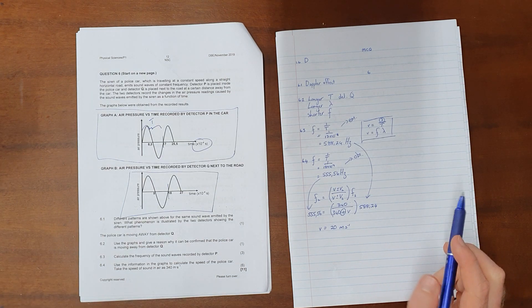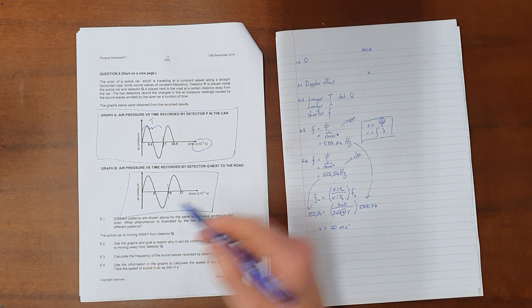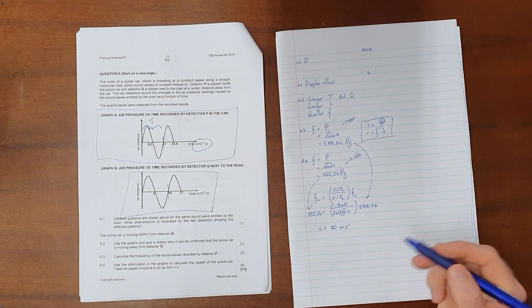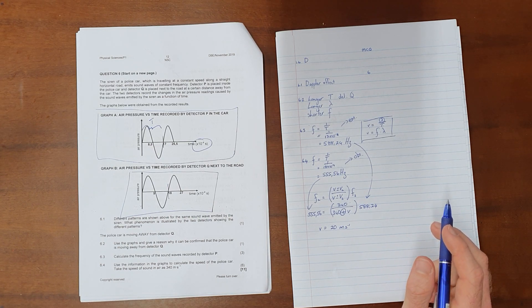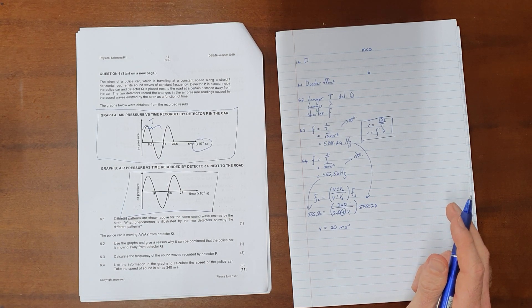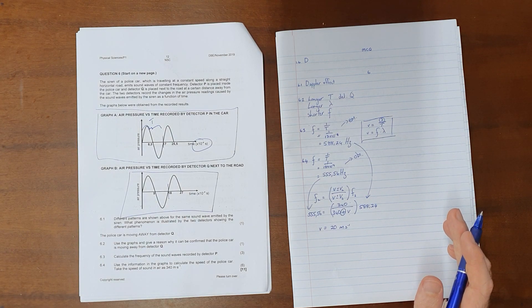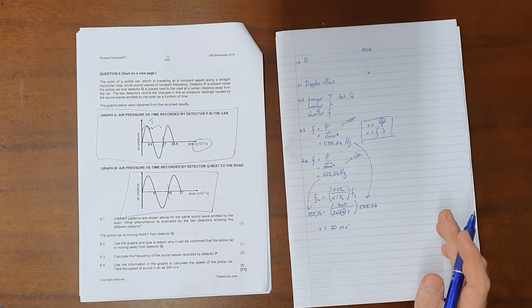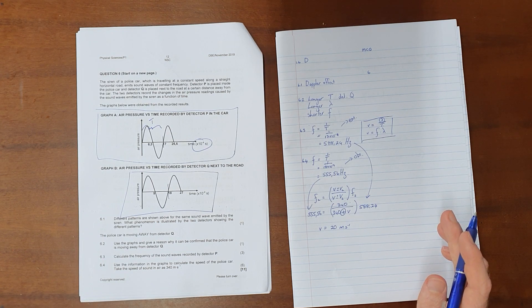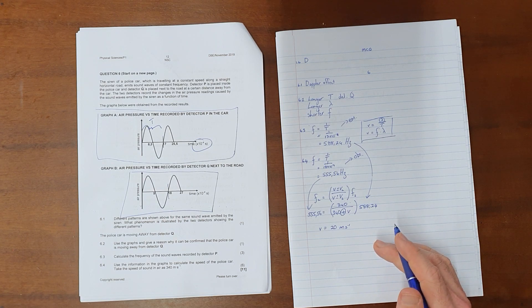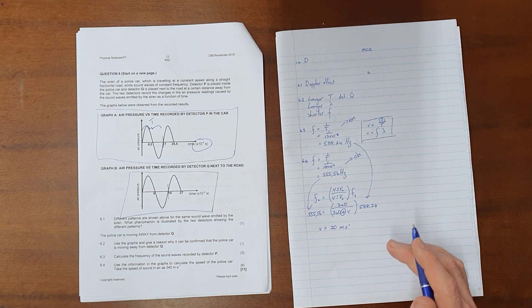A common question that is asked in Doppler effect that is not asked here would be for an explanation of what is happening. Normally an explanation would require that you show or explain that as a source and observer move towards each other the waves bunch up and the frequency increases and wavelength decreases, or as they move away from each other the waves spread out and therefore frequency decreases and wavelength increases.